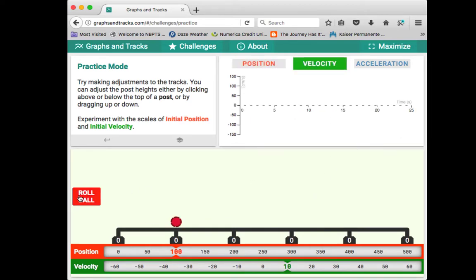If I click on the velocity graph and click roll ball, you get a horizontal graph, again like you'd expect with constant velocity.